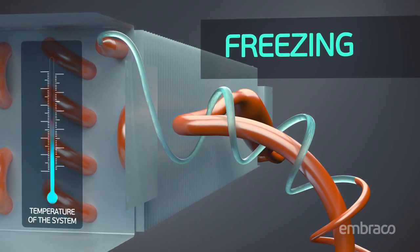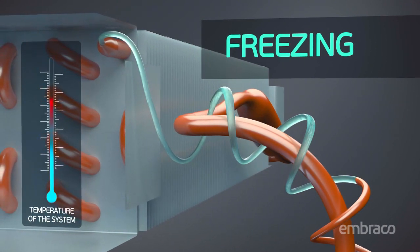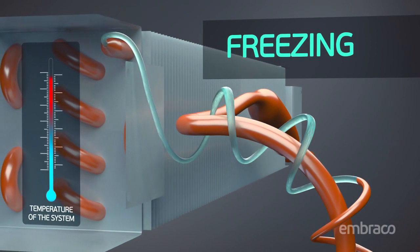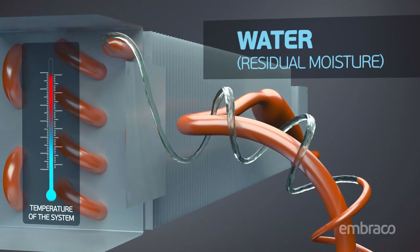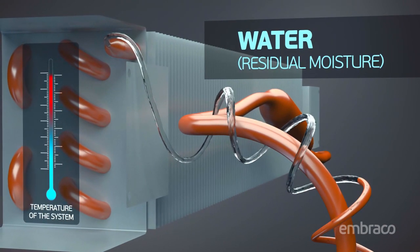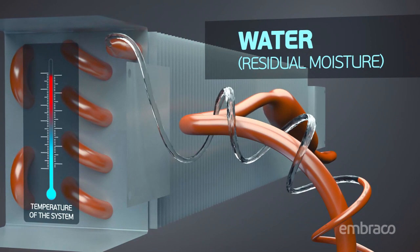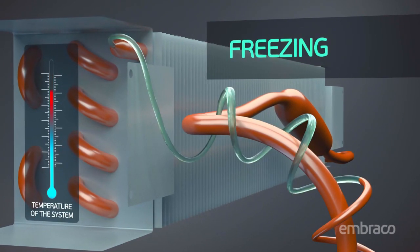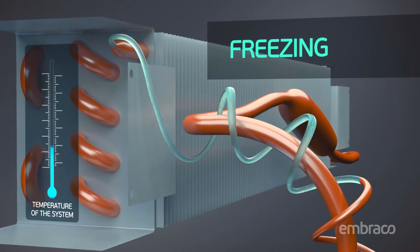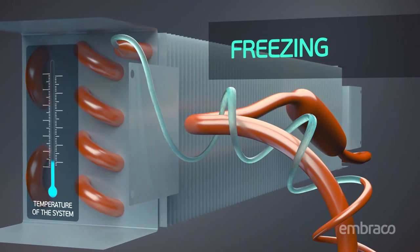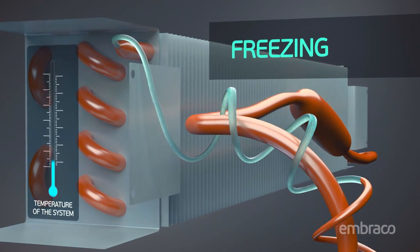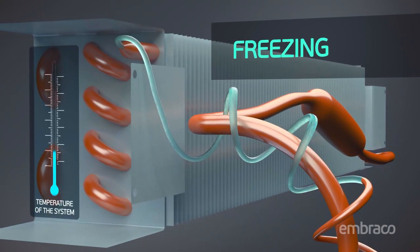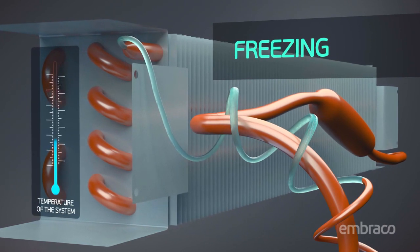By unplugging the refrigerator, the ice that was blocking the capillary will melt and cause the refrigerator to operate again. However, when it starts working again, the capillary will freeze once more, generating an intermittent blocking and unblocking cycle of the capillary, which can compromise food quality and preservation.